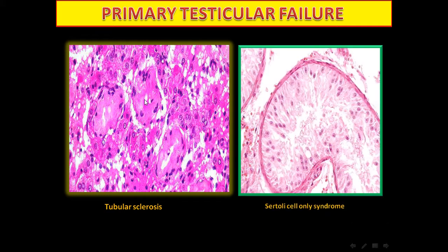Sertoli cell-only pattern, or Sertoli cell-only syndrome: we find only Sertoli cells in the seminiferous tubules. The Sertoli cells are pyramidal with prominent nucleoli — they are the only cells with prominent nucleoli inside the seminiferous tubules.